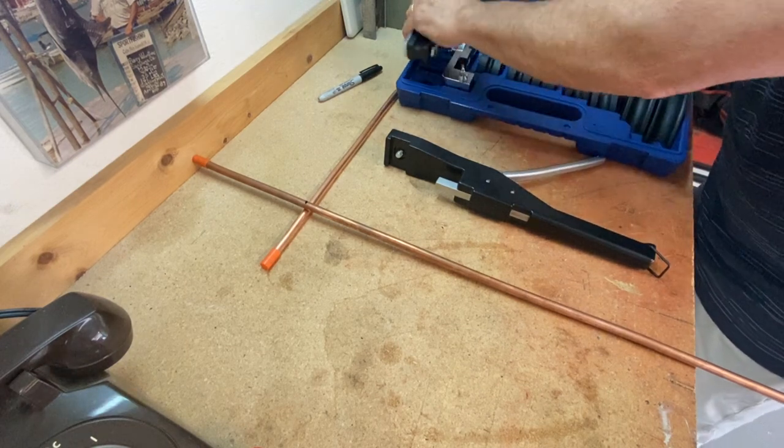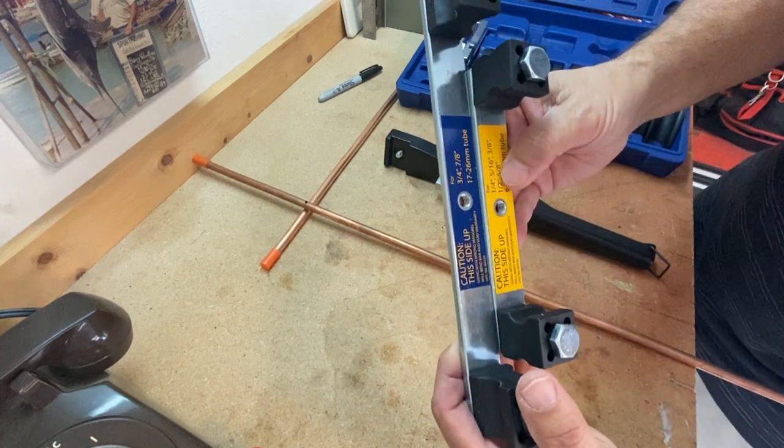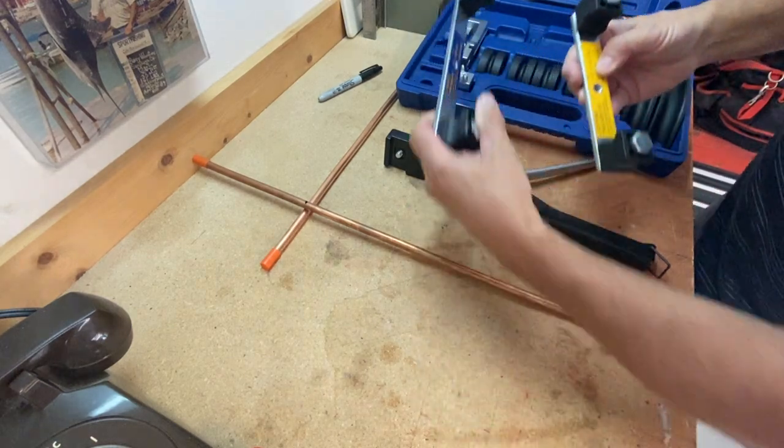You've got two different types of bending bars. This one's good for smaller size tubing. The other one's for bigger size tubing.